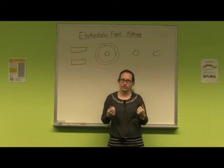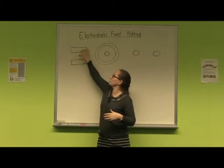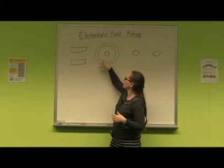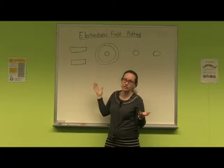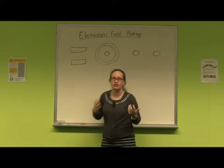These electrodes are going to be arranged with different geometries. For example, you'll use two rectangular plates, two concentric circles, and then two circles next to each other like this.